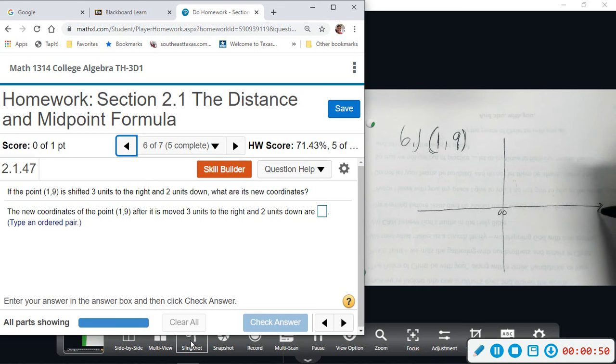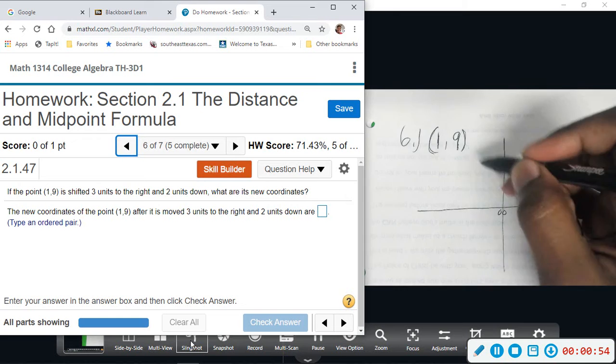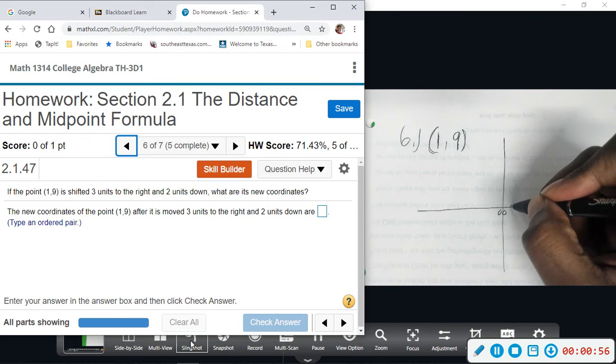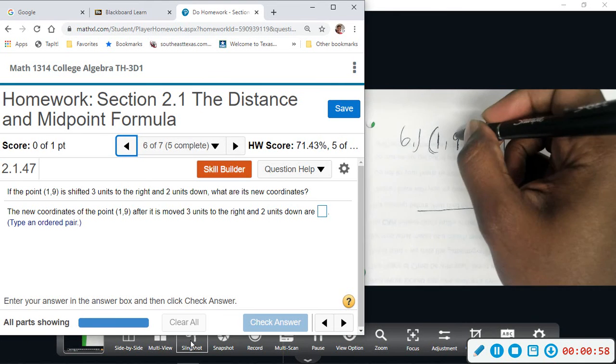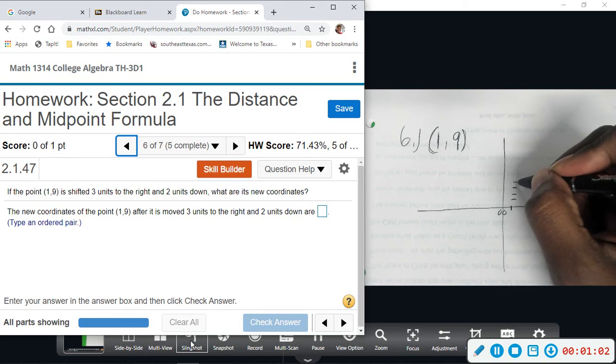When we go to the right we're going toward the positive side. So let's first plot (1, 9). We go over one and then we go up nine - this is y direction - one, two, three, four, five, six, seven, eight, nine.